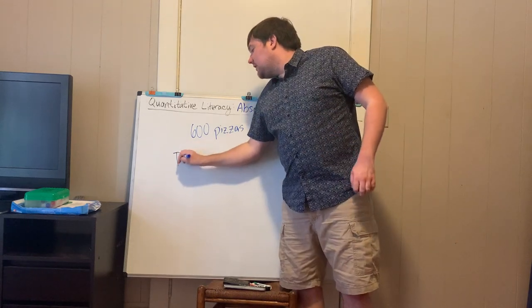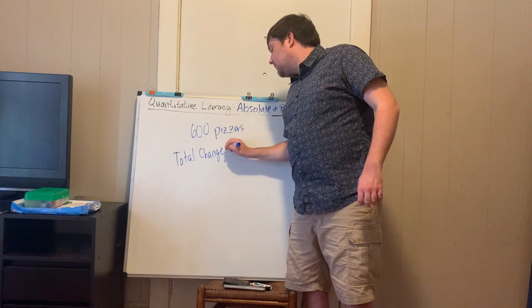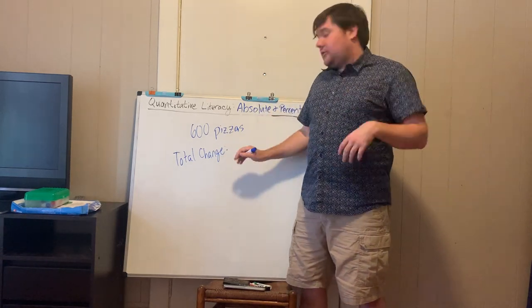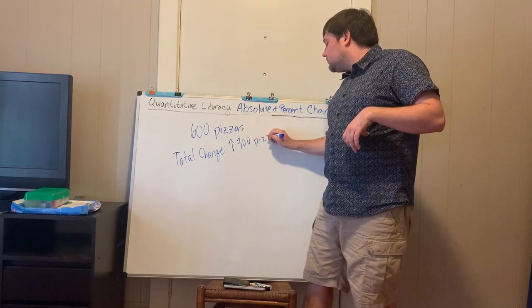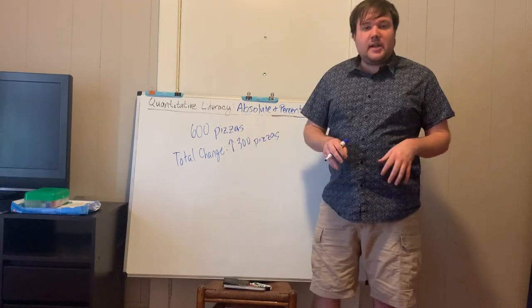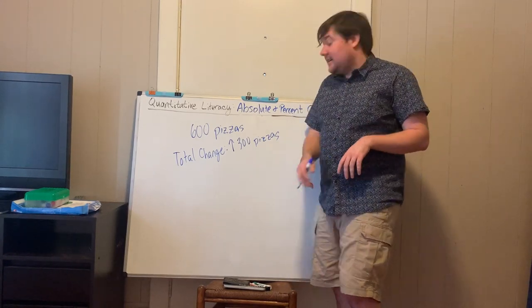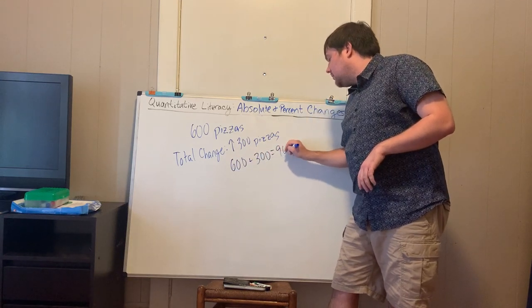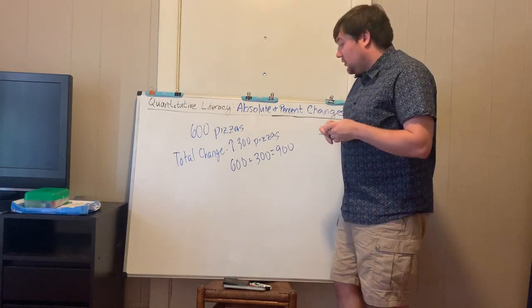Let's say we are given that the total change, or the absolute change, is that we increase by 300 pizzas. This is pretty obvious, but what is our new cell pizza? It takes 600 plus 300 and you get that we sold 900 pizzas in week two.